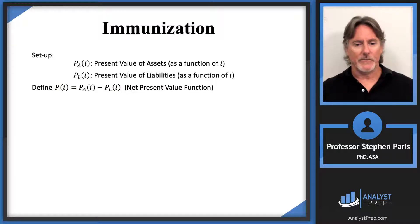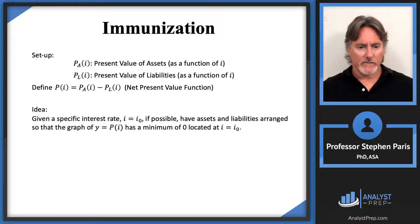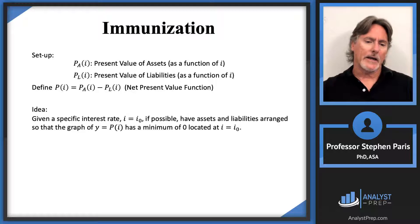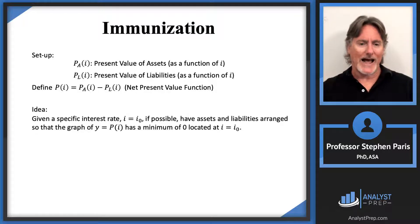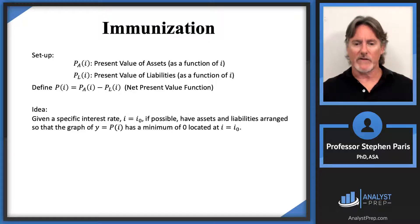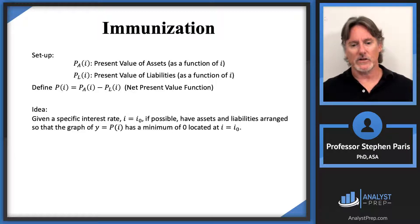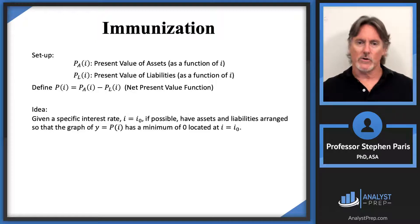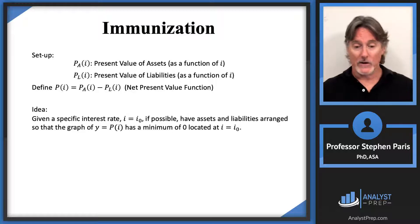Now let's look at the idea behind immunization. Given a specific interest rate I equal I-naught, if possible — and immunization is not always possible — you want to have assets and liabilities arranged so that the graph of the net present value function has a minimum of zero located at I equal I-naught. So your immunization occurs at a certain interest rate, which I've denoted I-naught.